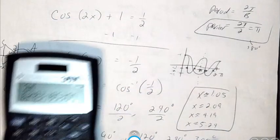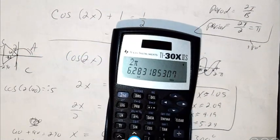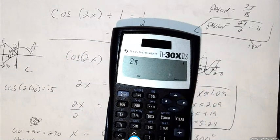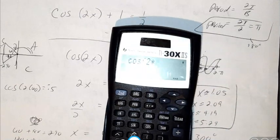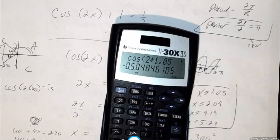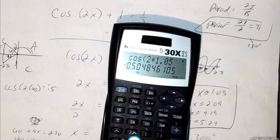And just to make sure, I'm going to plug in each of those in my calculator in radians mode. So I'm going to put my calculator in radians mode. I'm going to plug in cosine of 2 times 1.05. It gives me basically negative 0.5. Mind you, I did estimate. I didn't plug in the exact values.